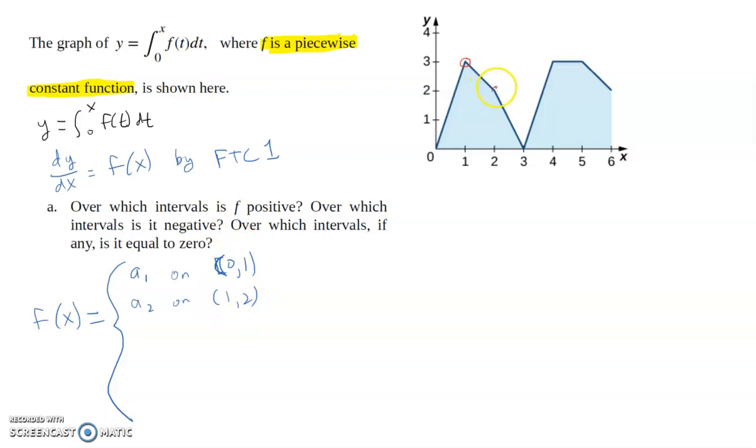Because I have another change in the slope of those lines, it'll have a different value on 2 to 3, another one on 3 to 4, the fifth one on 4 to 5, and then another value a6 on 5 to 6.